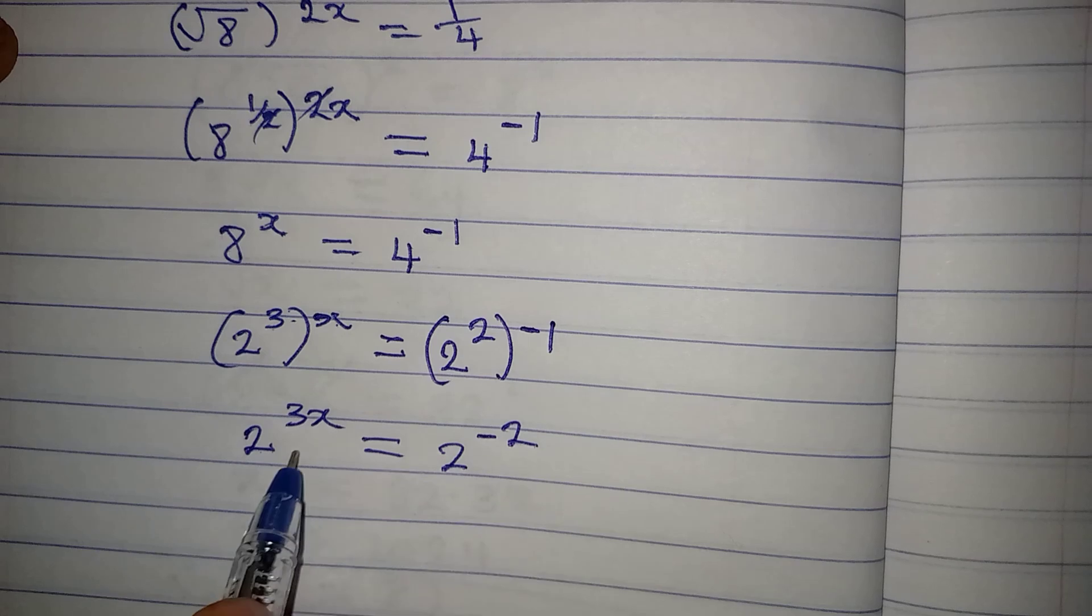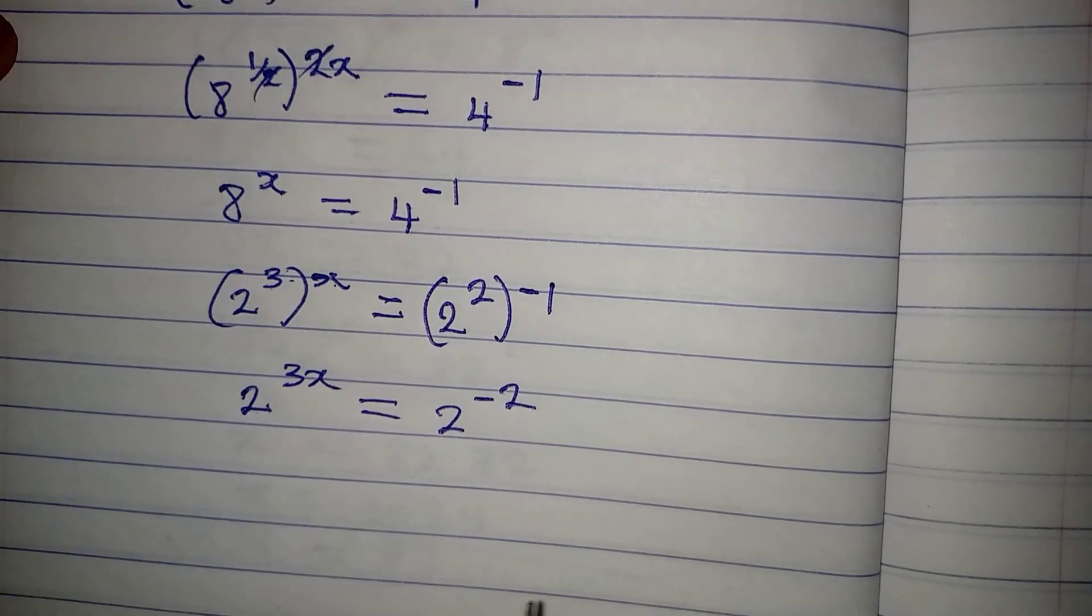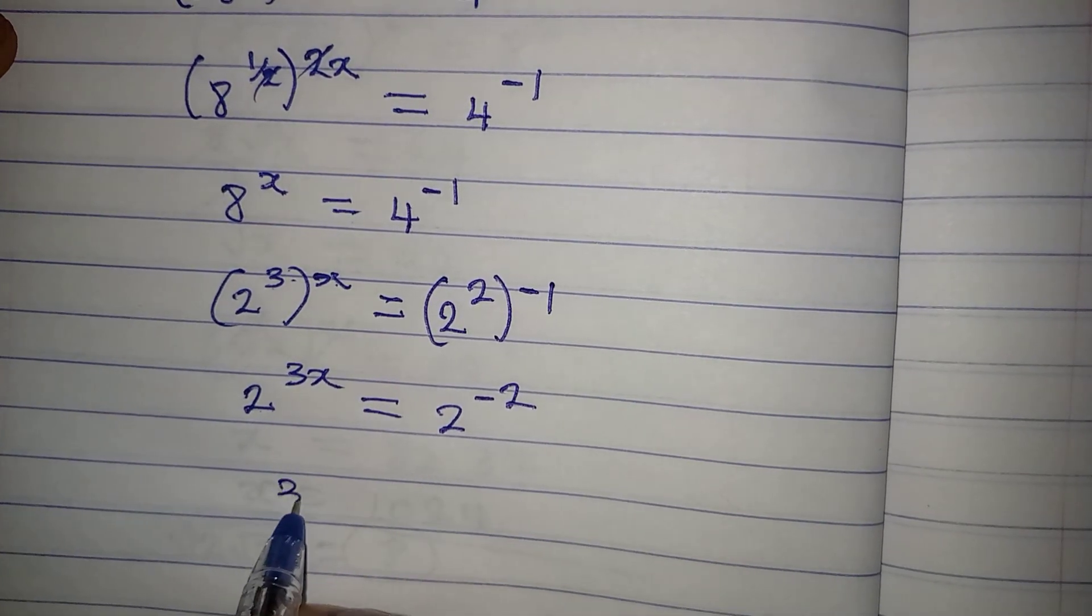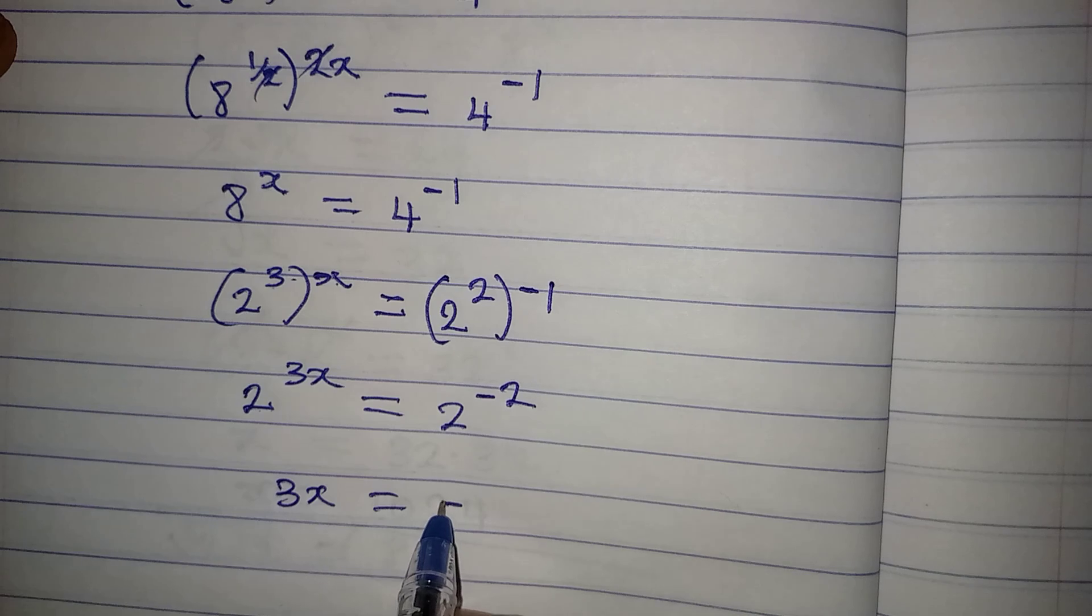Now, the bases are the same, we work with the powers. So we can say that 3x is equal to minus 2.